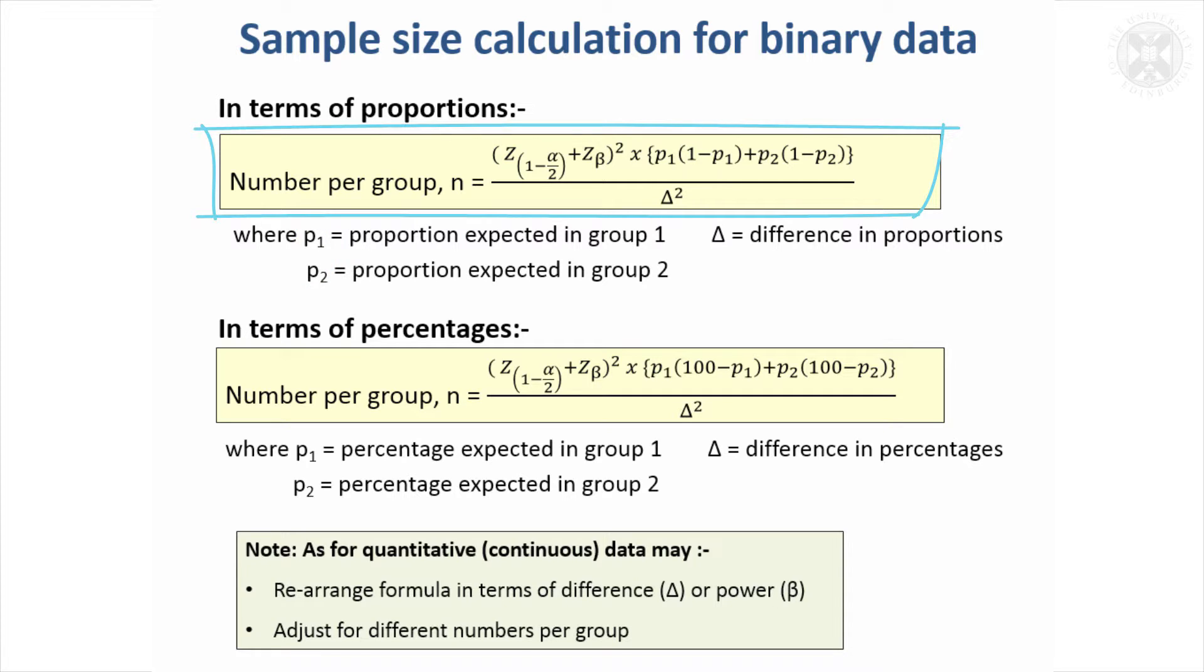And the formulae can be adapted in this way. So instead of a standard deviation coming in here, we've got variability according to the proportions that you might expect to detect differences between.